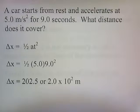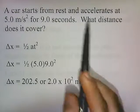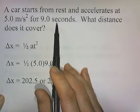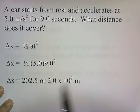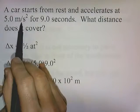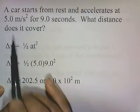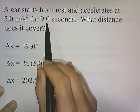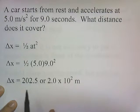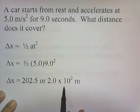A car starts from rest and accelerates at 5 meters per second squared for 9 seconds. What distance does it cover? Starting from rest means initial velocity is 0, so we use the simplified formula. Delta x equals one-half times 5 times 9 squared. One-half times 5 times 81 gives 202.5, or to two significant figures, 2.0 times 10 to the 2 meters.